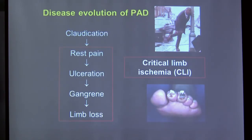Rest pain, ulceration, and gangrene are grouped under the term critical limb ischemia (CLI) — ischemia meaning lack of blood supply. Once a patient reaches CLI, limb loss is a serious risk. Claudication patients overall tend to have a more stable course: roughly a third improve, a third stay the same, and a third worsen over their lifetime.